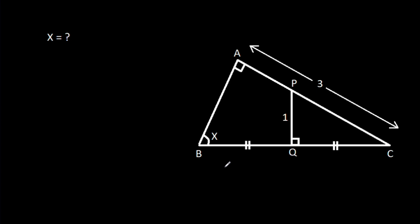In this video, we have been given that angle BAC is 90 degrees, angle PQC is 90 degrees, and BQ is equal to CQ, and PQ is 1, AC is 3, and angle ABC is X. We have to find X.